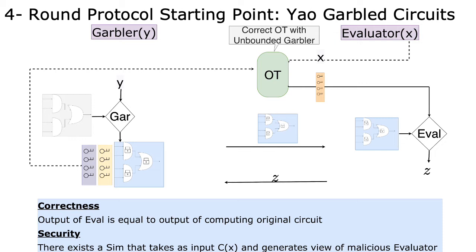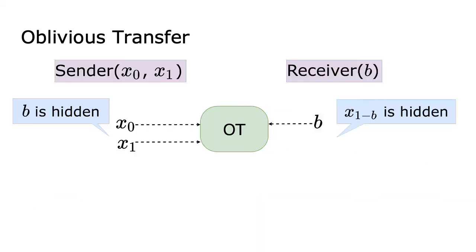Correctness requires that the output of the evaluator equals the output of the original circuit. Security requires that there exists a simulator that simulates the view of a malicious evaluator given the output only. Note that in order to simulate this view, the simulator needs to extract the output of the adversary. Parties transfer the label through an oblivious transfer protocol. It is a two-party protocol between the sender and the receiver, where the sender has input messages and the receiver has choice bits to choose one of the sender's inputs. Security guarantees that the receiver does not learn anything about the other input of the sender, and the sender does not learn anything about the receiver's input.